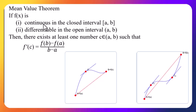Let f(x) be a function which is continuous in the closed interval [a, b] and differentiable in the open interval (a, b). Then there exists at least one number c ∈ (a, b) such that f'(c) = [f(b) - f(a)] / (b - a).